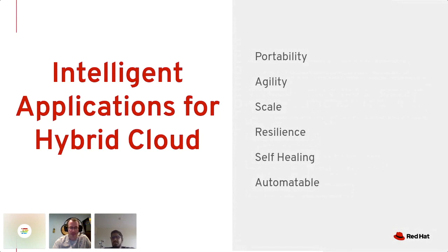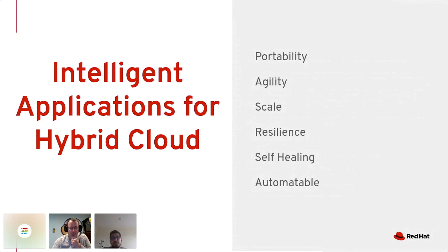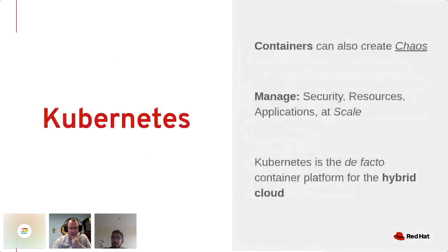So given all these benefits, how do you go about actually building one of these intelligent applications for the hybrid cloud? Well, a bunch of containers don't make an application on their own. For that, you really do need something like a container orchestration platform such as Kubernetes or OpenShift. These guys contain that last bit of magic sauce for your intelligent apps. This is where I'd ask people who have heard of Kubernetes to raise their hands, but things change.